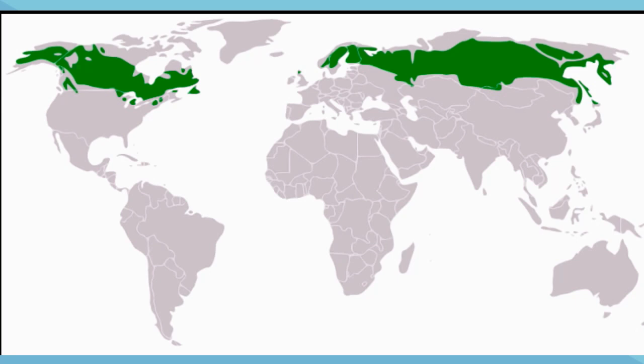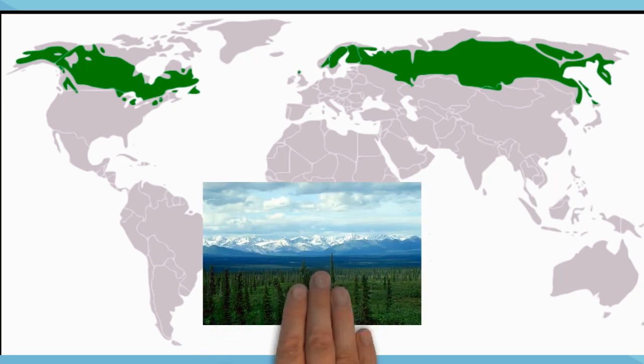The arctic tundra is found in North America, Asia, and Europe, and circles the arctic circle and stretches southward down to the taiga.